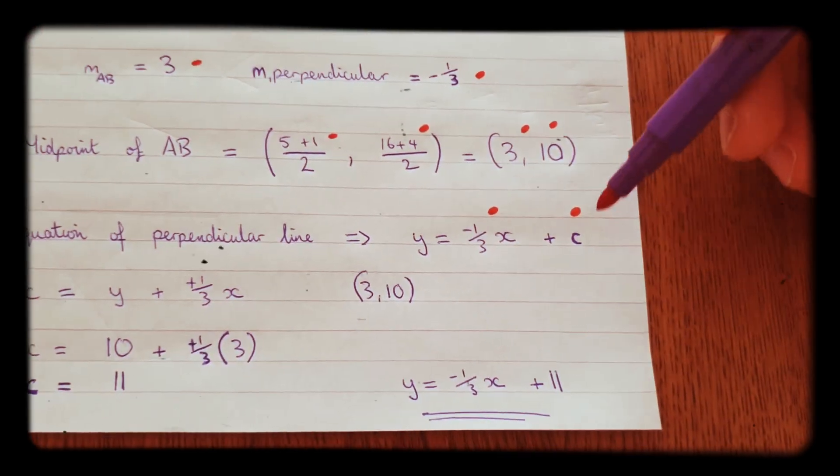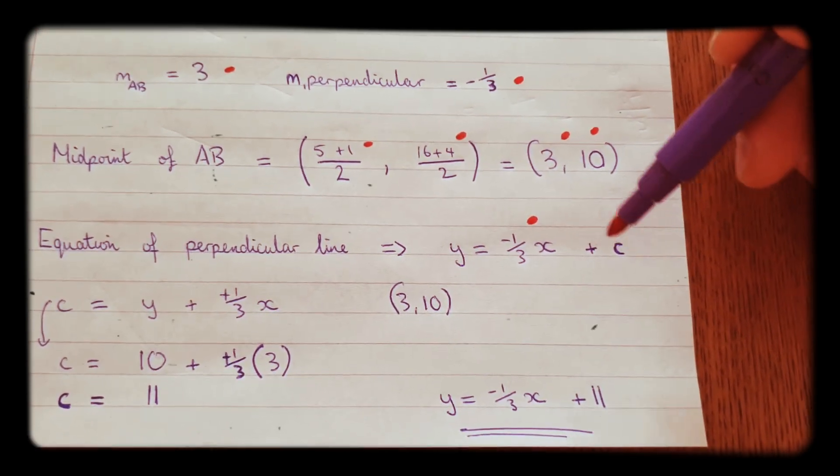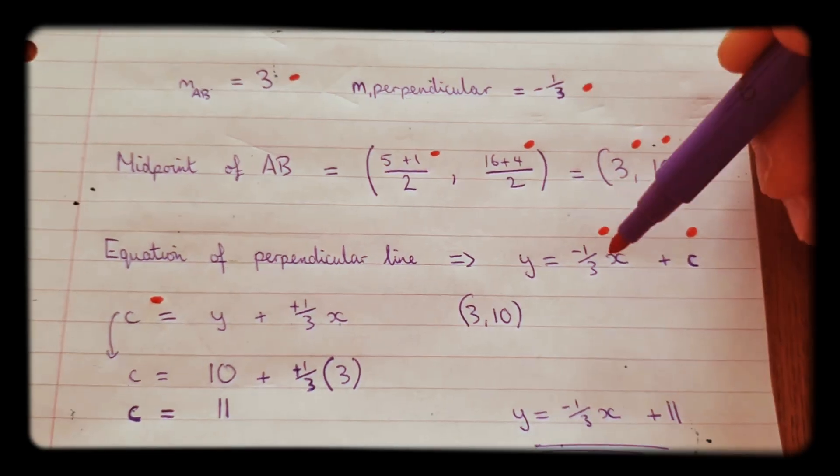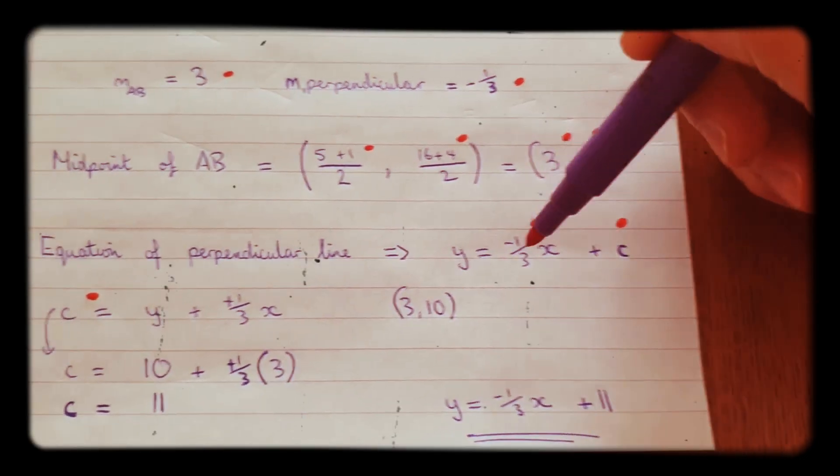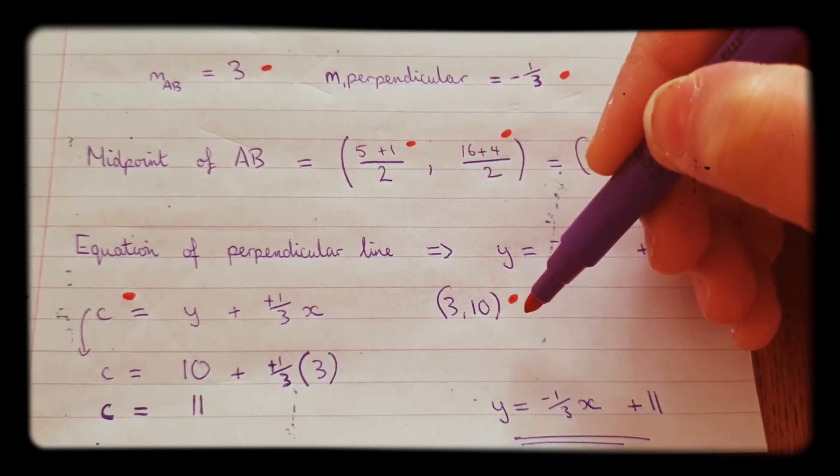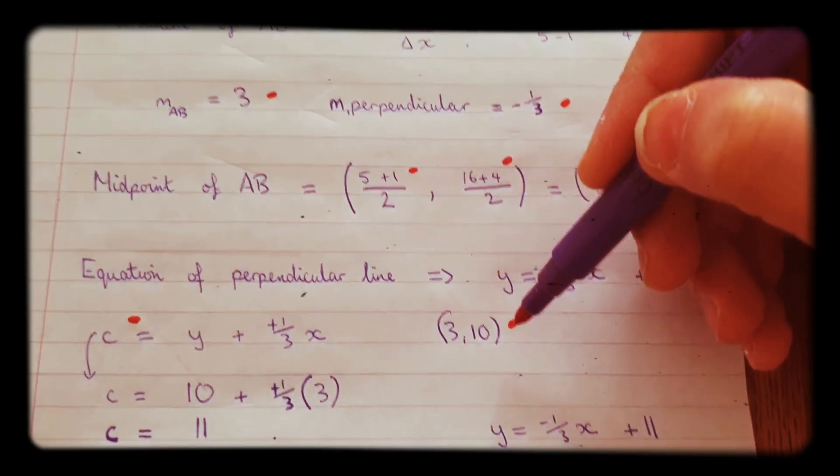Now, the way we figure out what C is, we need to rearrange it. So C equals Y plus 1 third X. Rearrange this to make C the subject. And then we put the (3,10), the midpoint, that coordinate there, we put that into this equation.